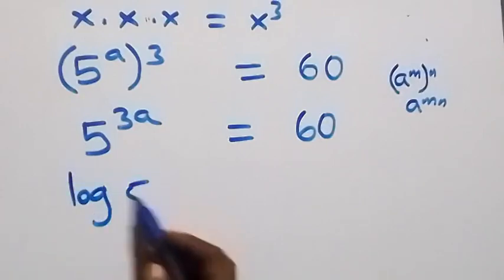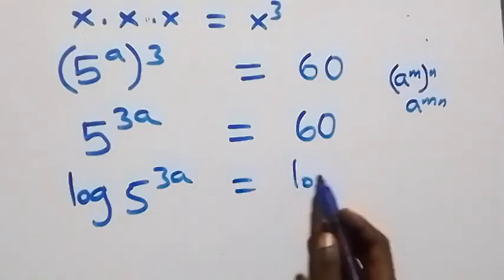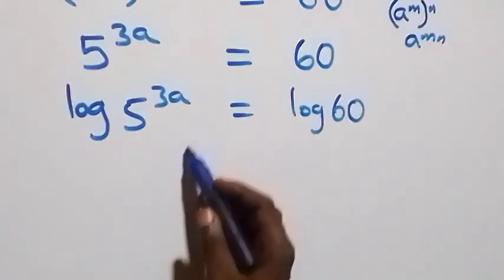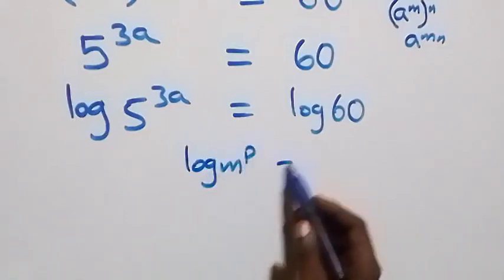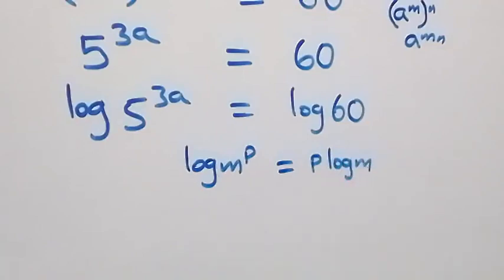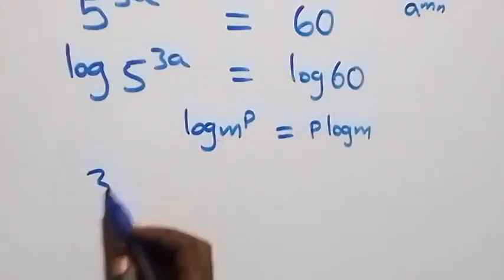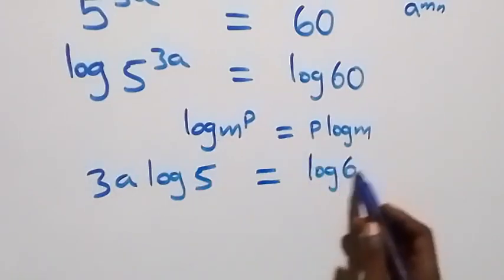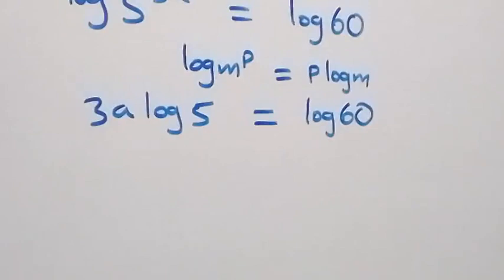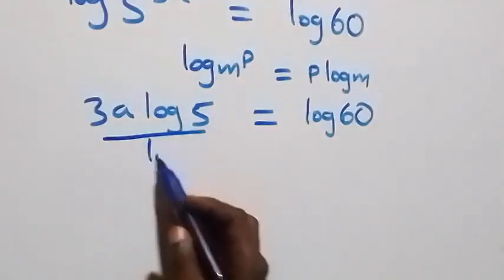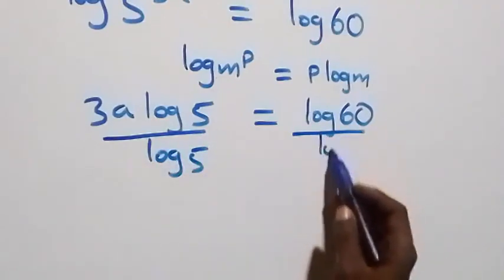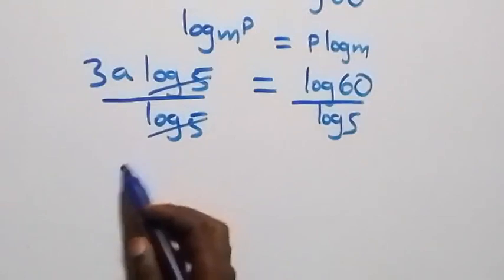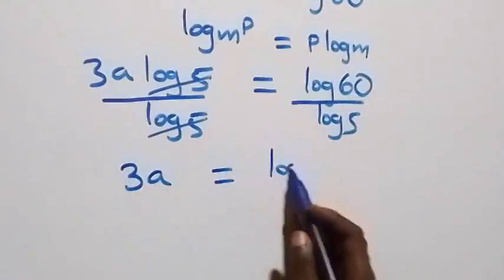From here we take the log on both sides, and we have log of 5 raised to power 3a equals log 60. We apply the power rule of logarithms, where log of m raised to power p is the same as p times log m. So all we have here becomes 3a log 5 equals log 60. Next, we divide both sides by log 5, and log 5 cancels, giving us 3a equals log 60 over log 5.